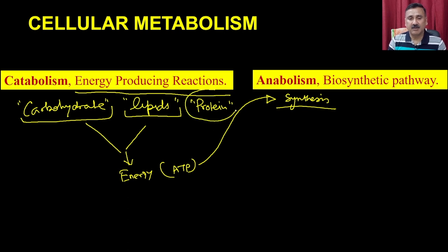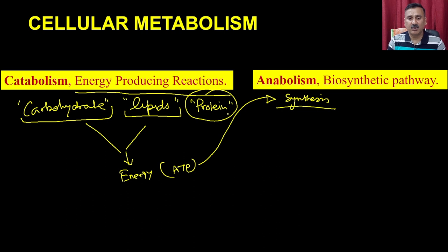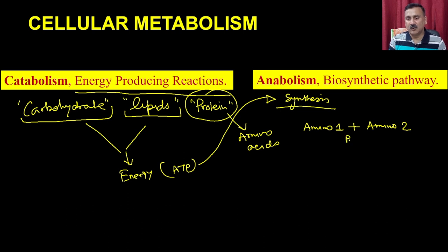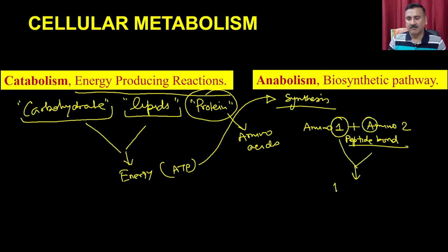For example, if I want to synthesize a protein, a bond formation is required. Protein is made up of amino acids. Amino acid one is attached to amino acid two by a bond called the peptide bond. Bond formation requires spending some amount of energy. When you spend energy, you activate the functional groups present on amino acid one and amino acid two, and that is how they combine together to form a protein or peptide linked by a peptide bond.